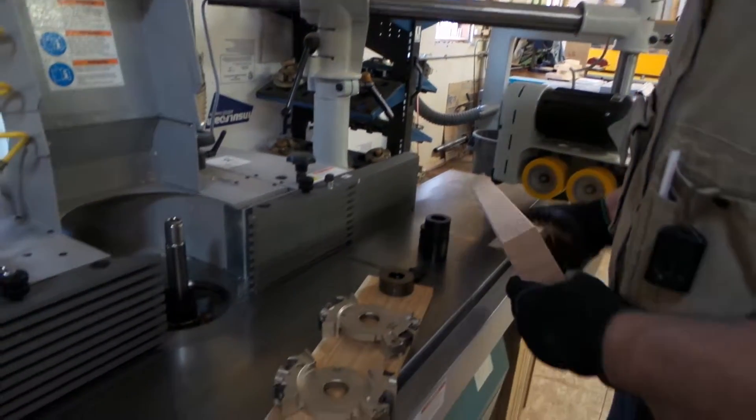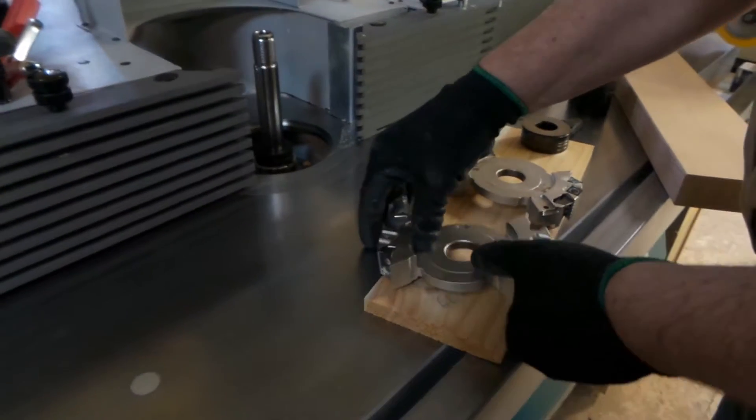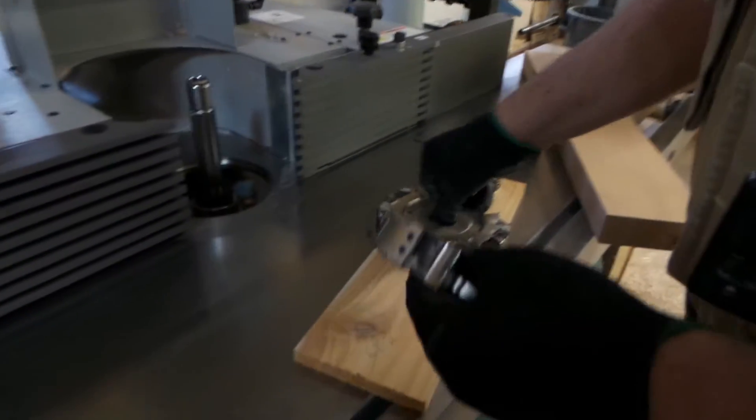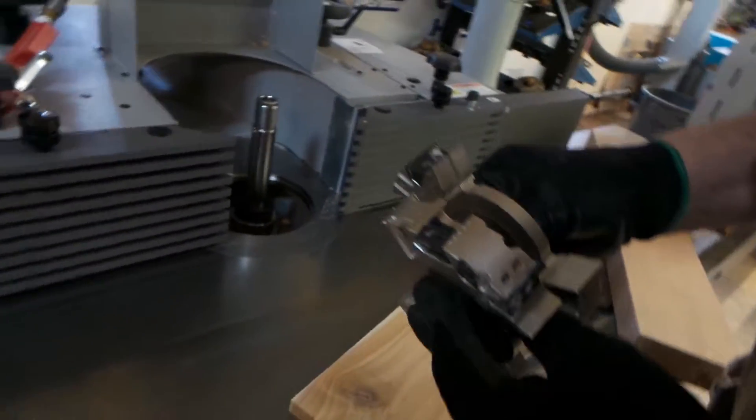So to do that we've got the radius knives in both cutters, it looks something like that.